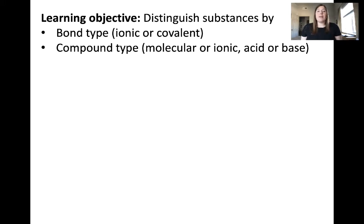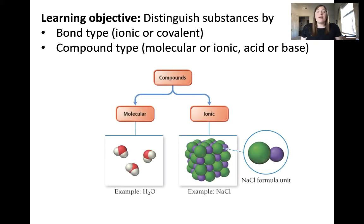You should be familiar with differentiating between molecular and ionic compounds from the inorganic nomenclature video. To jog your memory, molecular compounds are composed of only nonmetals, whereas ionic compounds are composed of metals and nonmetals.